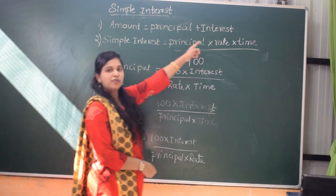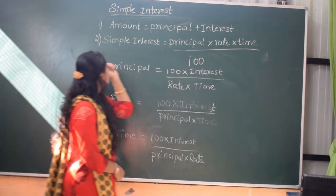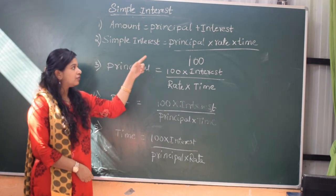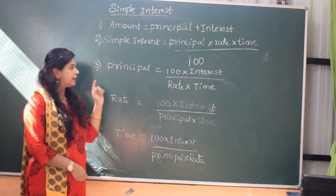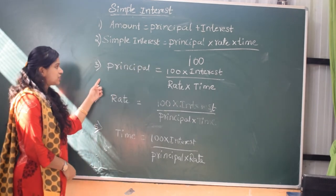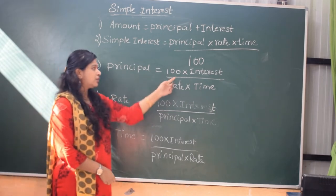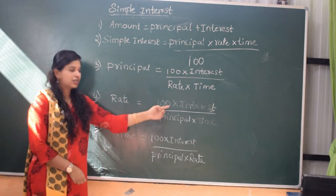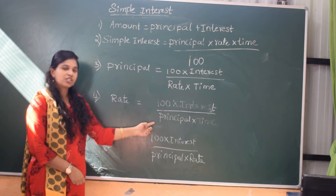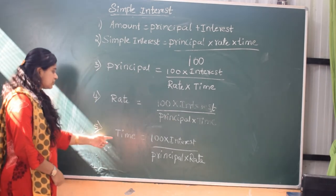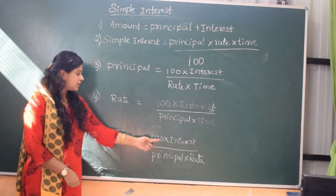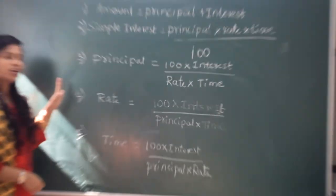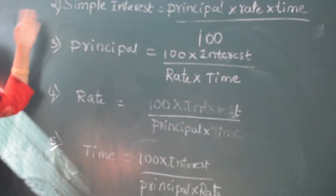Amount is equal to Principal plus Interest. Simple Interest is equal to Principal into Rate into Time divided by 100. Principal is equal to 100 into Interest divided by Rate into Time. Rate is equal to 100 into Interest divided by Principal into Time. Time is equal to 100 into Interest divided by Principal into Rate. These are the important formulas to learn in this class.